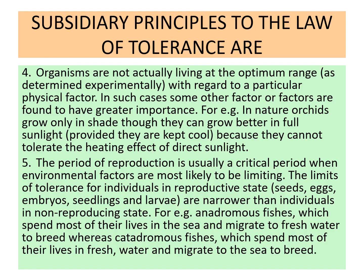The period of reproduction is usually a critical period when environmental factors are most likely to be the limiting ones. Various individuals migrate in order to successfully reproduce. For example, anadromous fishes live in the sea but migrate to fresh water for reproduction, so that less stress is given to the young ones and they get better food, better temperature, and less competition. Similarly, catadromous fishes spend their whole life in fresh water but migrate to the sea for reproduction and then come back.